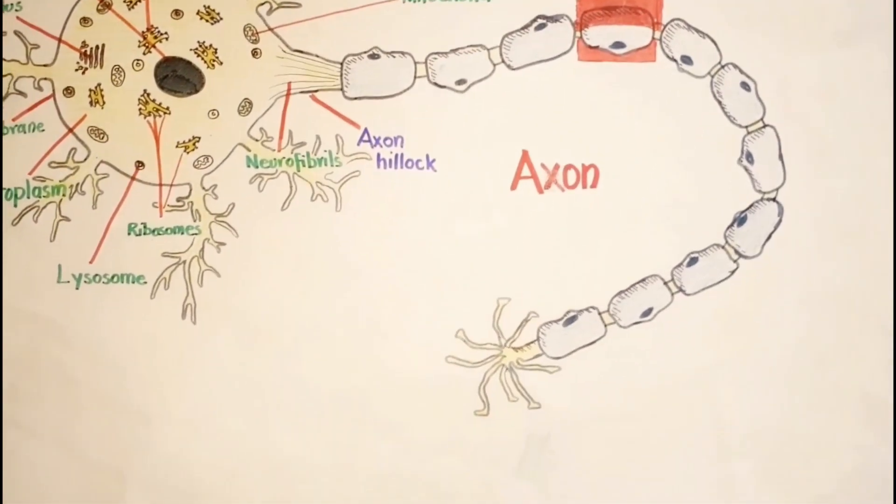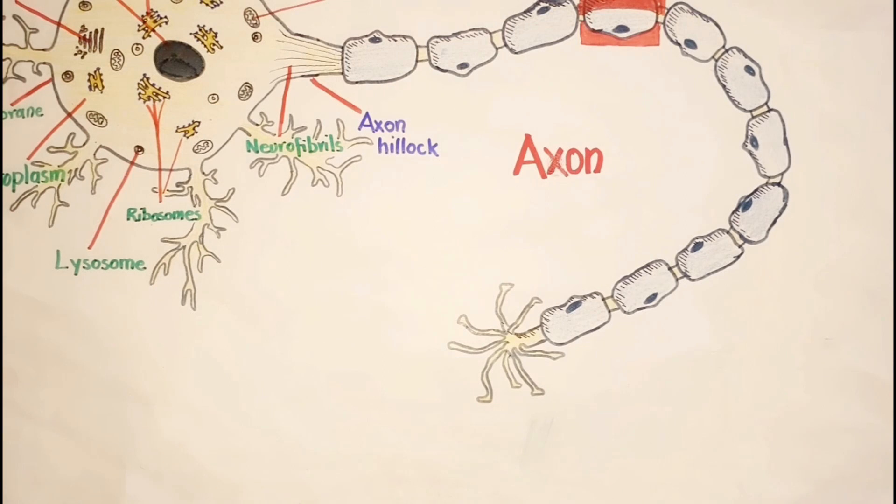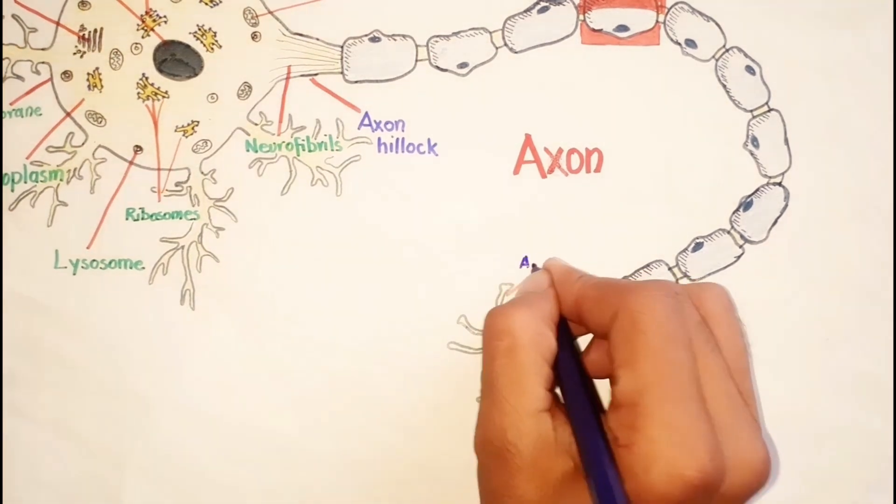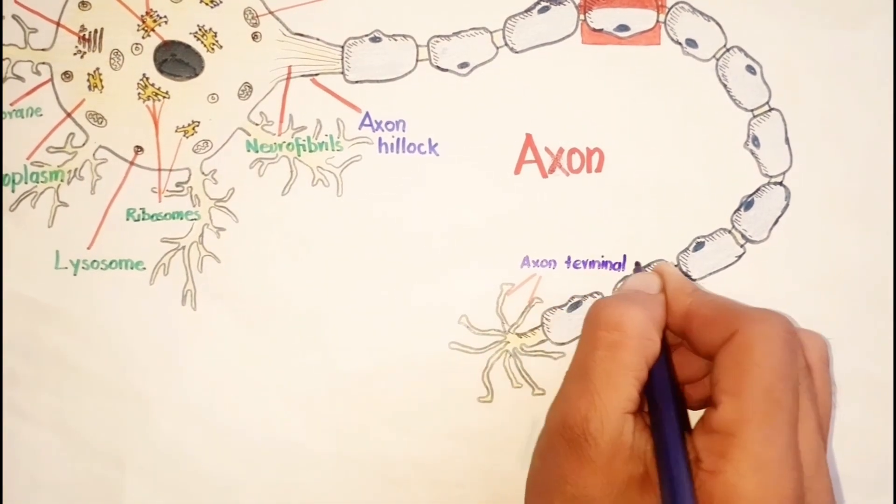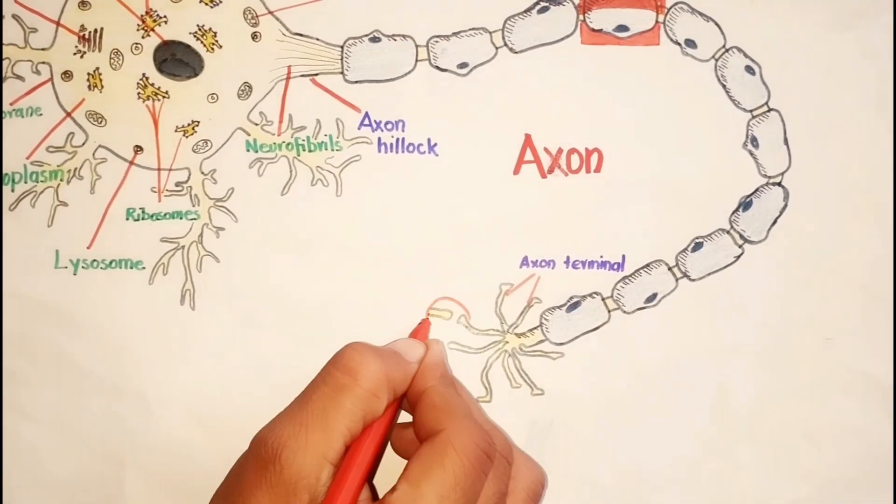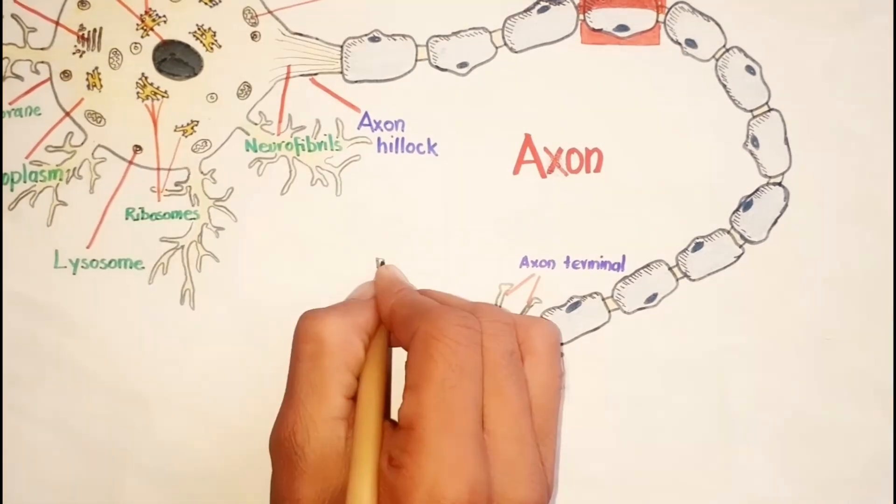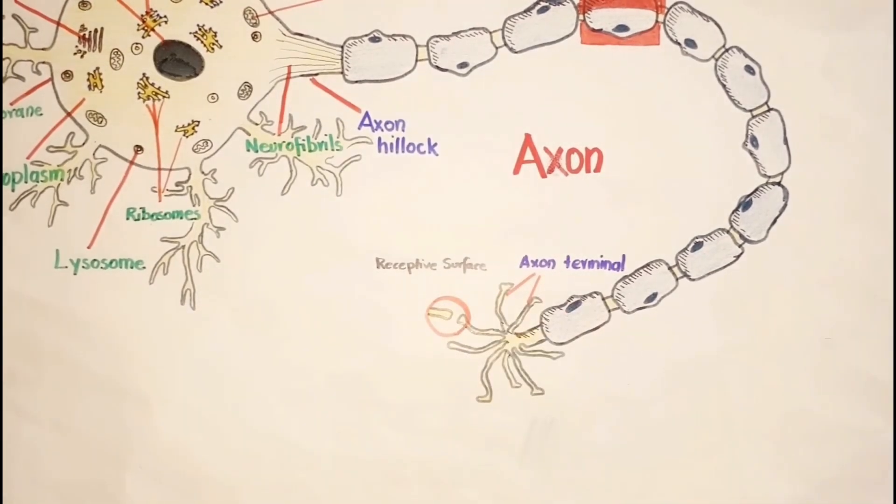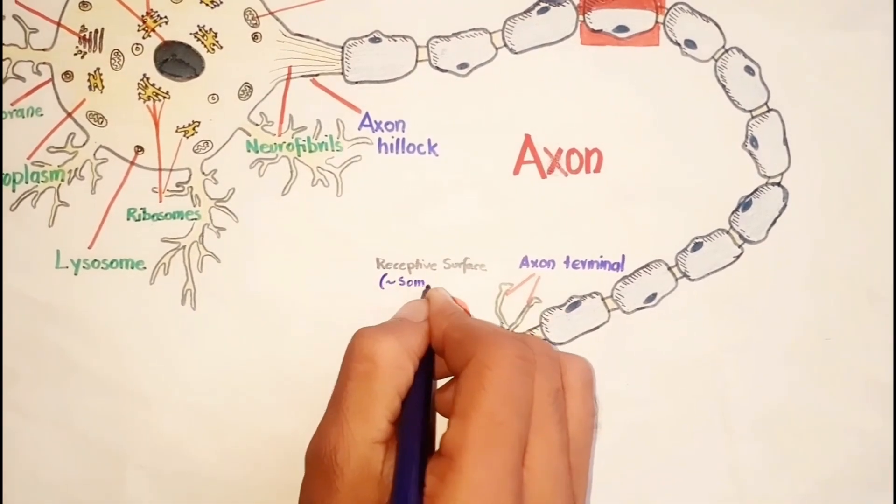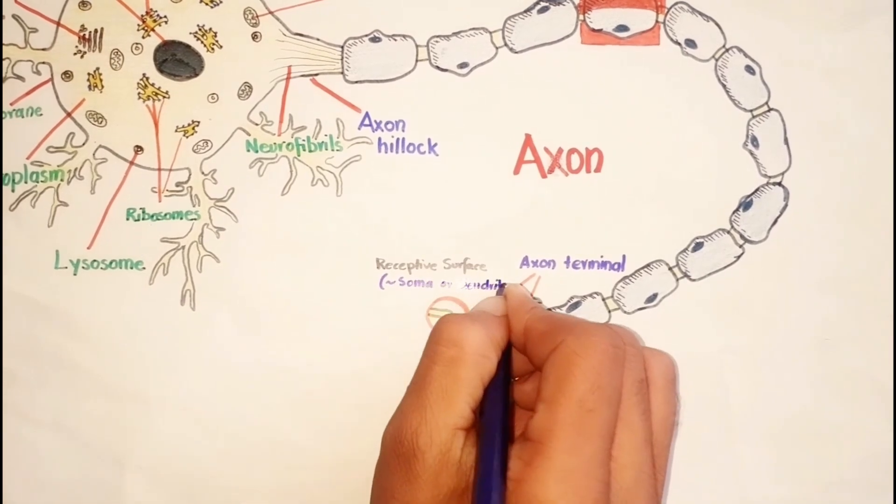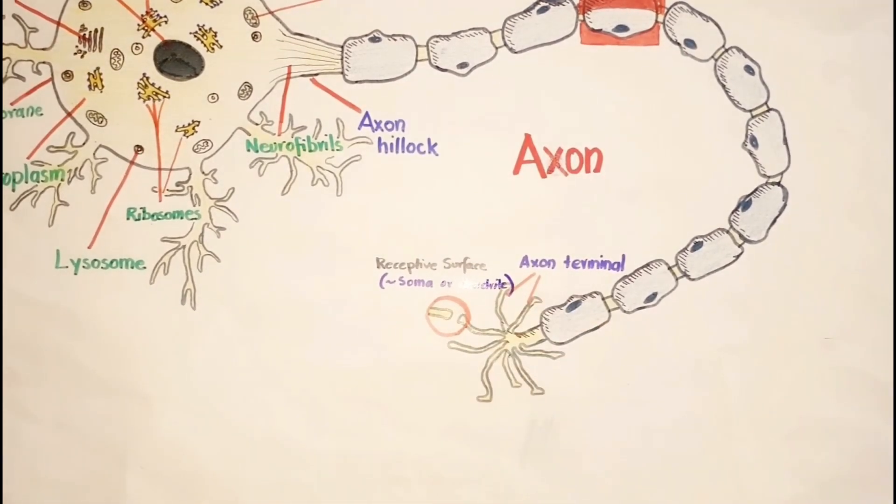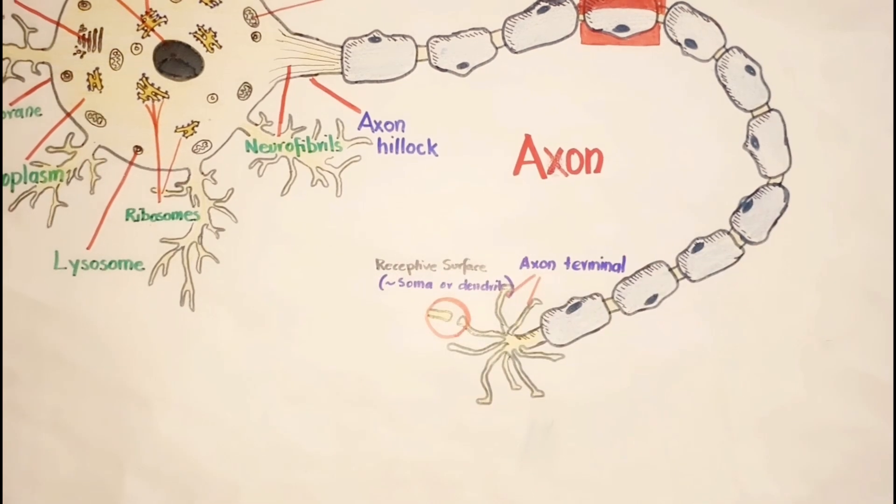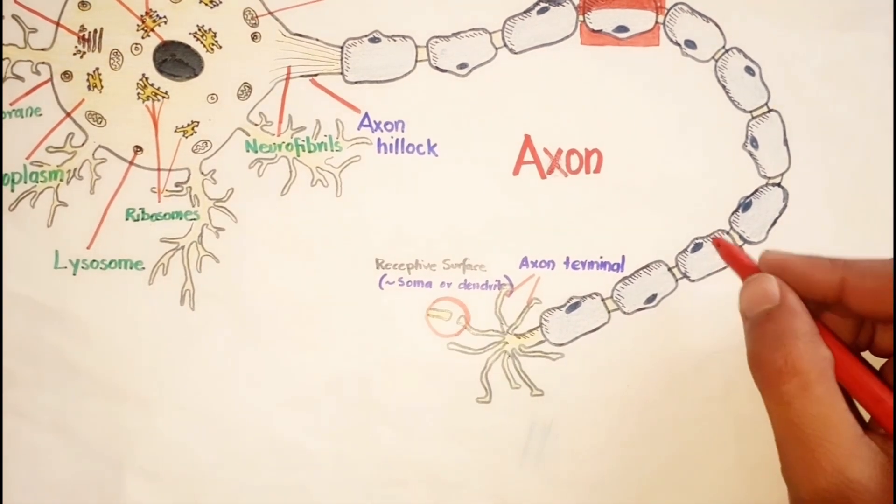The axon end may branch into many fine extensions that are called the axon terminals and these are in contact with the receptive surfaces of other cells which may be a dendrite or a soma. Dendrites and axons are usually called nerve fibers.